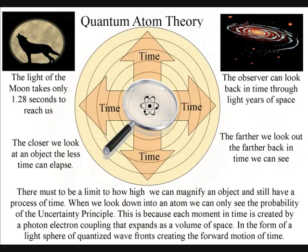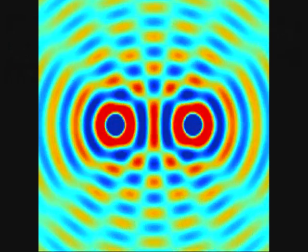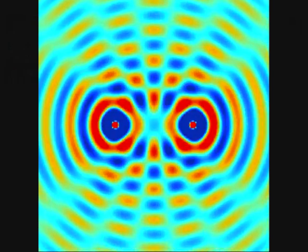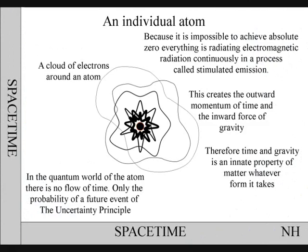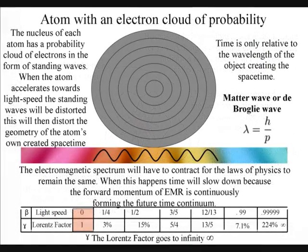When we look down into an atom, we can see time-dependent quantum mechanics, when the atoms bond together, forming the symmetry and geometry of their own spacetime. But when we zoom in on an individual atom, we find time-independent quantum mechanics, and there is no flow or arrow of time, and all we have is probability.